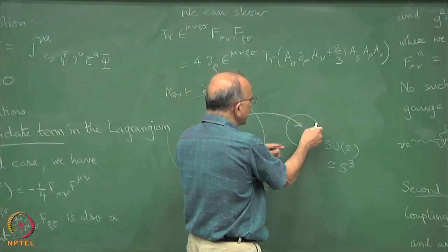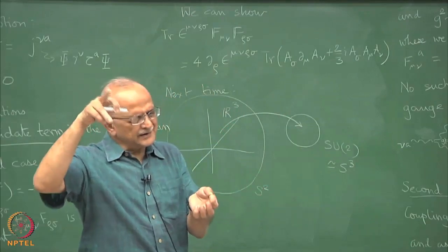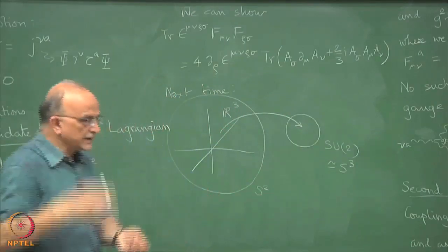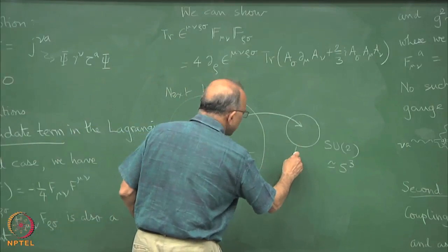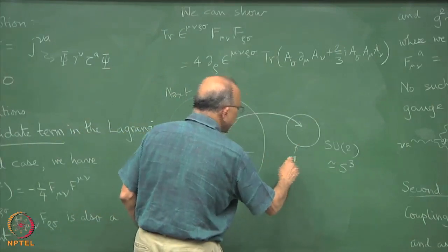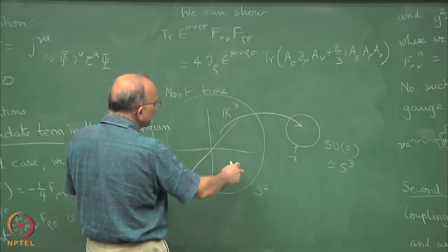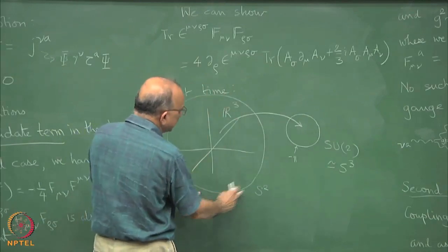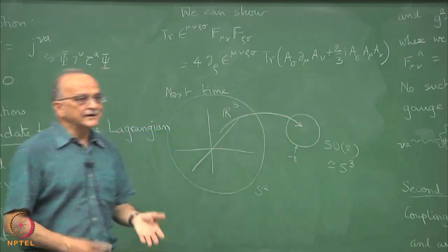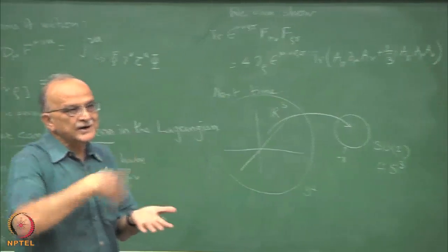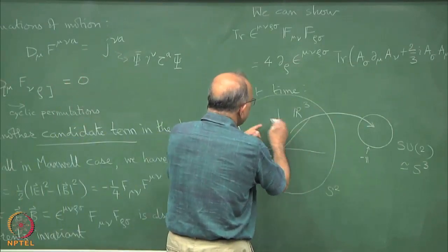Remember you start from the origin and you come out, the outermost shell you identify with one point because it is e raised to 2 pi i, so it is just equal to minus 1. The outermost surface is equal to minus identity of SU2. For the same reason if you identify the outermost, in other words you map the outermost surface into this minus 1, then structurally this has become topologically same as this. And then the number of ways you can map an S3 into an S3 is classified by integers.